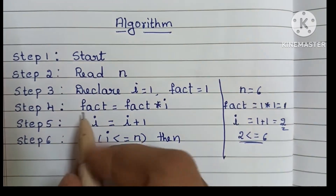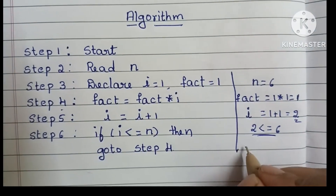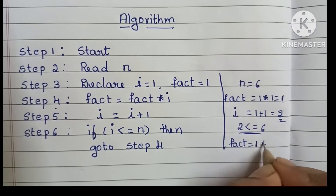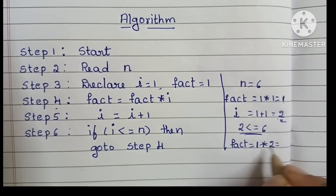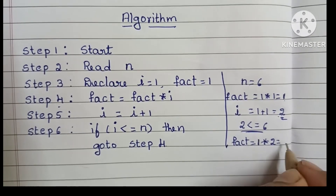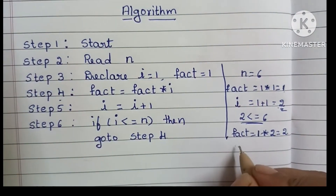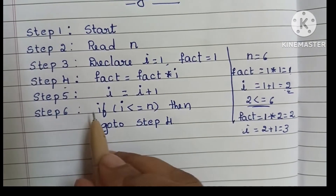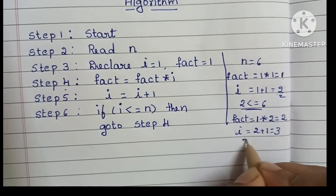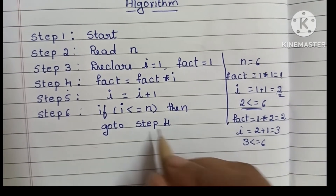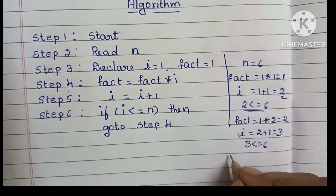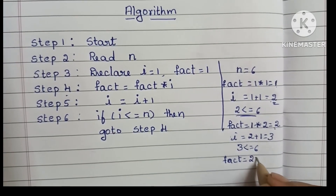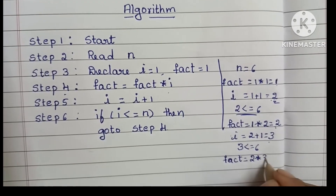Going back to step 4, we calculate fact equals fact into i. The value of fact is 1 and i is now 2, so fact equals 1 into 2, which is 2. Then i becomes 2 plus 1, that is 3. In step 6 we check again: 3 is less than or equal to 6 — condition is true — so we go back to step 4. Fact is now 2 into 3, which equals 6.